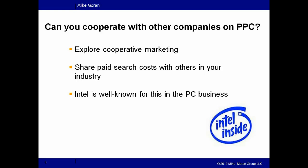You might not be in the PC business, but cooperative marketing can still work for you. Can you ally with a company that is looking for the same customers you are — not competitors, but perhaps you sell a product and another company sells the service? Or you could do the Intel approach and work with the manufacturer of products you sell and share expenses with them. If you can share the same keywords but split the cost with someone, that can be a really useful way of lowering your costs in paid search.